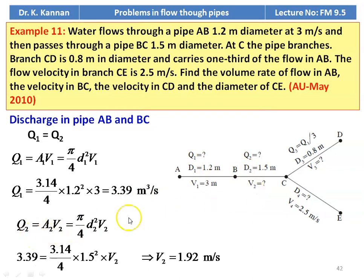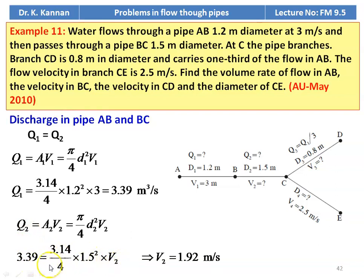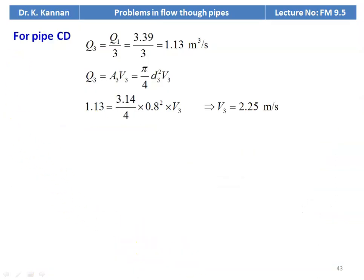Now, velocity in BC: Q2 equal to A2 V2, which is pi by 4 D2 square into V2. Substituting: 3.39 equal to 3.14 divided by 4 into 1.5 square into V2. Solving this equation, velocity V2 equal to 1.92 meters per second. For pipe CD: Q3 equal to Q1 by 3, which is 3.39 divided by 3, equal to 1.13 meter cube per second.